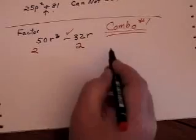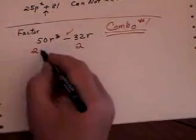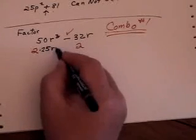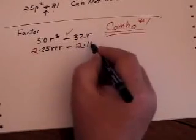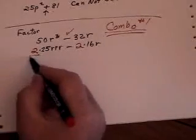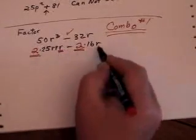And I also notice that once you've taken the two times the 25 there, you have R, R, R, and here you have two times 16 and an R. So you can see that not only is two a common factor, but so is one of the R's.